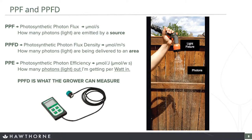PPFD can be seen as the light intensity on a surface. PPE — photosynthetic photon efficiency — measures how efficiently a fixture converts watts into photons: how many photons am I getting for every watt that I put in. Think of the light source as a hose nozzle and the photons as the water droplets flowing out. If I had a bucket catching all that water, I could define my PPFD — how many photons I'm gathering over a certain amount of time in that area.